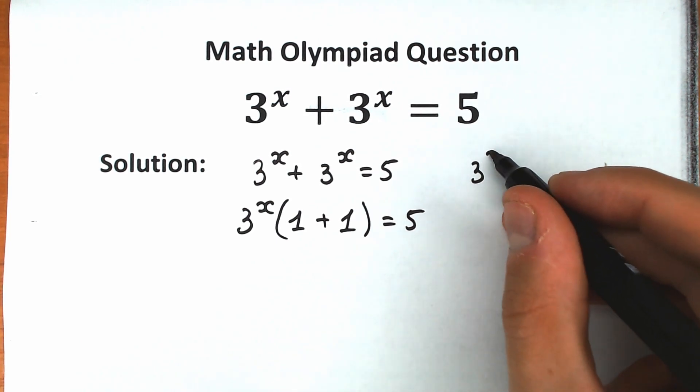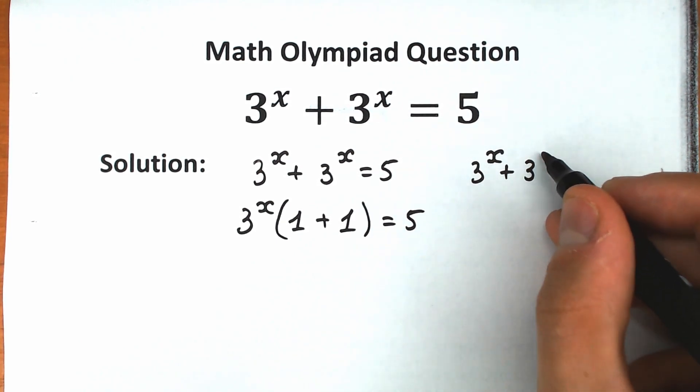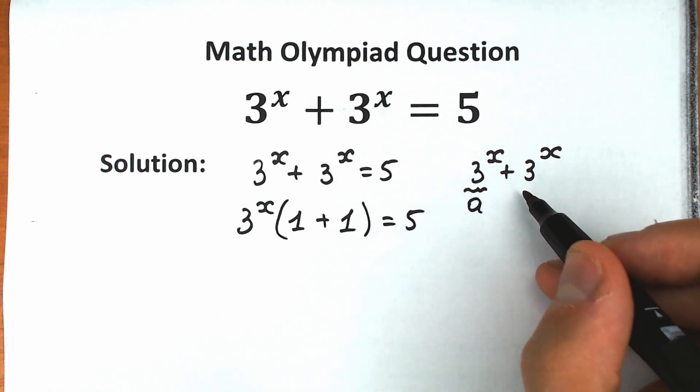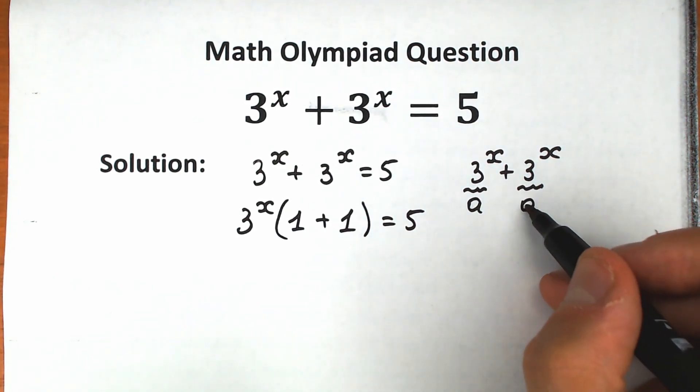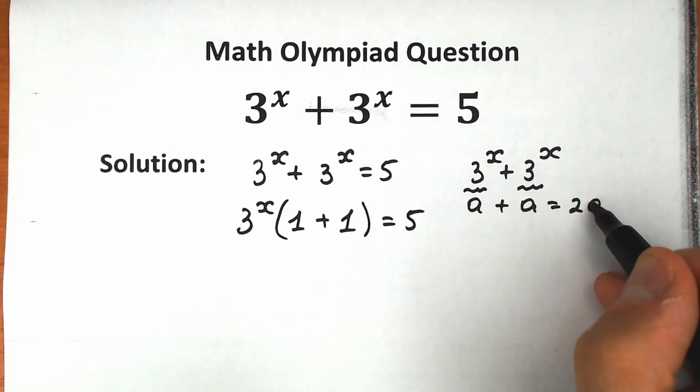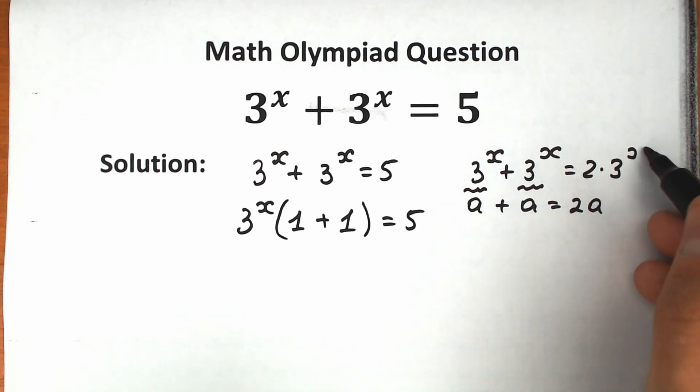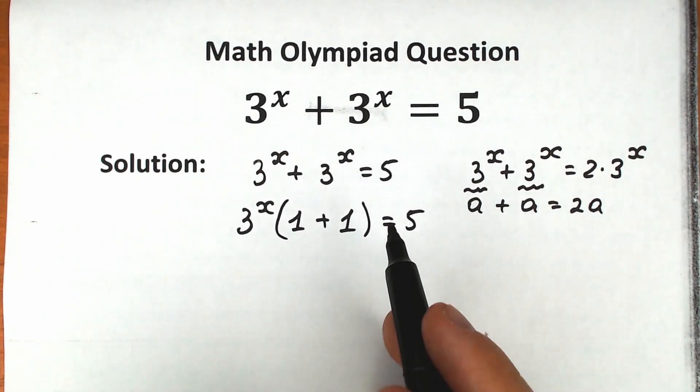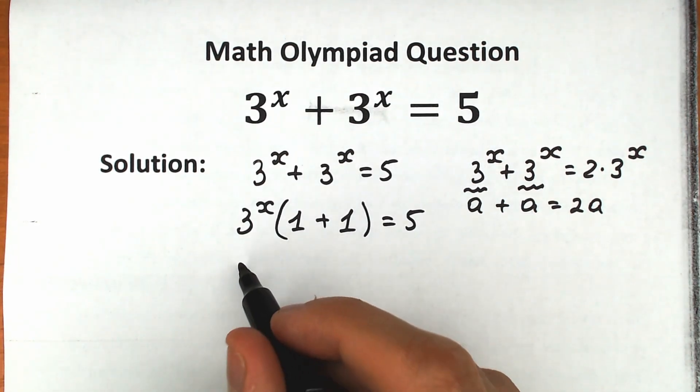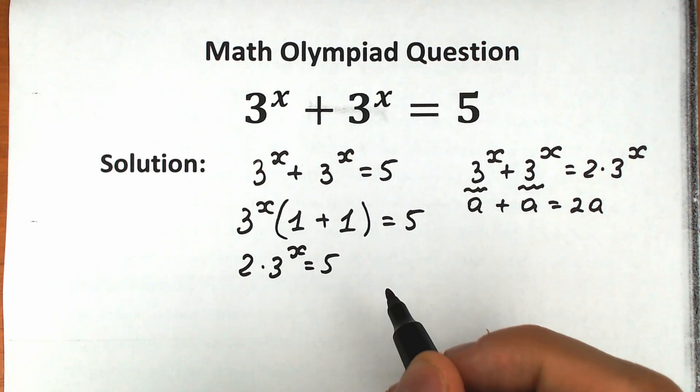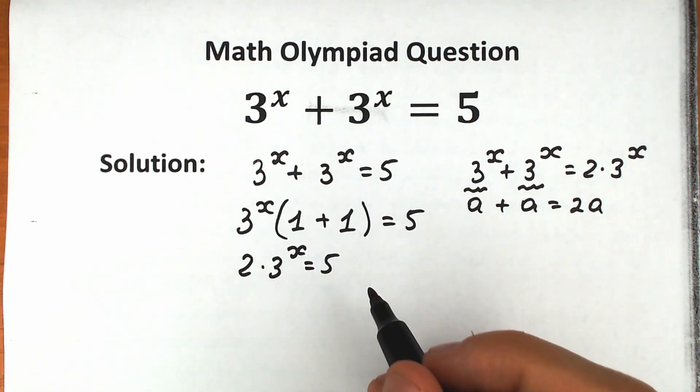If you have 3 to the x plus 3 to the x, we add absolutely the same expression. For example, this is our a, and this is our a, so absolutely the same expression. If we add a plus a, we have 2a. As a result, we can easily write 3 to the x plus 3 to the x as 2 times 3 to the x. So we have 3 to the x times (1 plus 1) equal to 2. So we have 2 times 3 to the power x equal to 5. This is our first step, which simplifies us a lot.